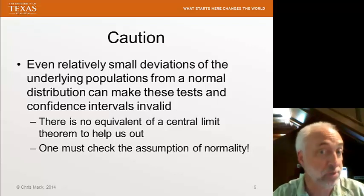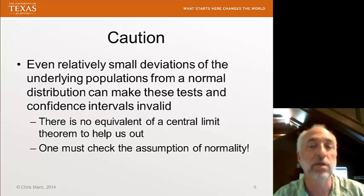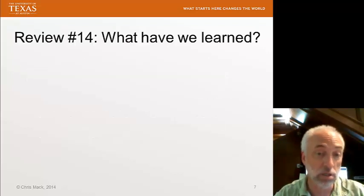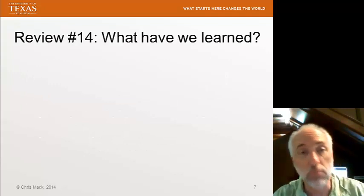Here, the only way we can create a sampling distribution for the variance is by knowing what the population distribution is. Therefore, if you're going to assume that your population is normally distributed, you have to check that assumption because it may be wrong. And if it's wrong, you'll get the wrong answer.